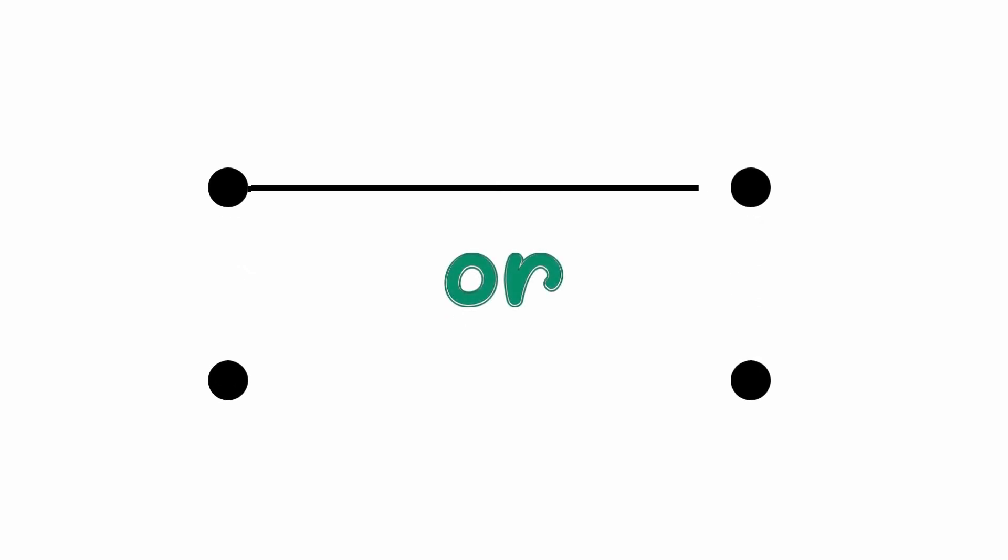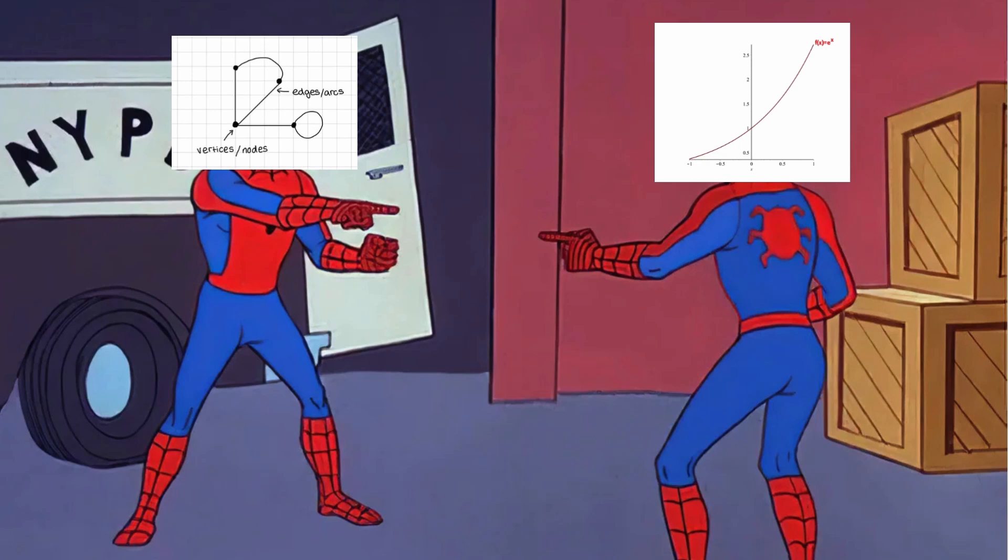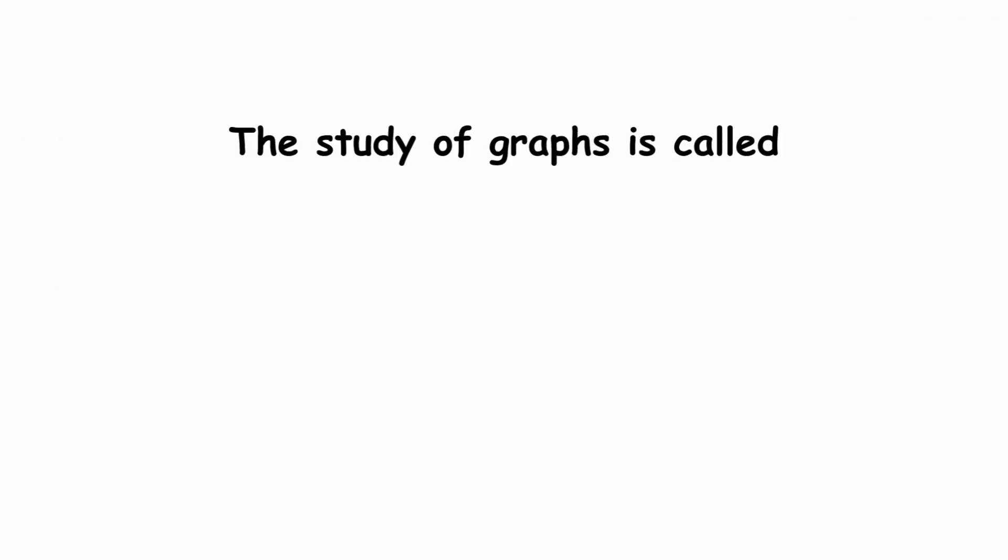Any two vertices in a graph either are or aren't connected by an edge between them. This type of graph is not to be confused with the graph of a function, which is a different thing. The study of graphs is called graph theory.